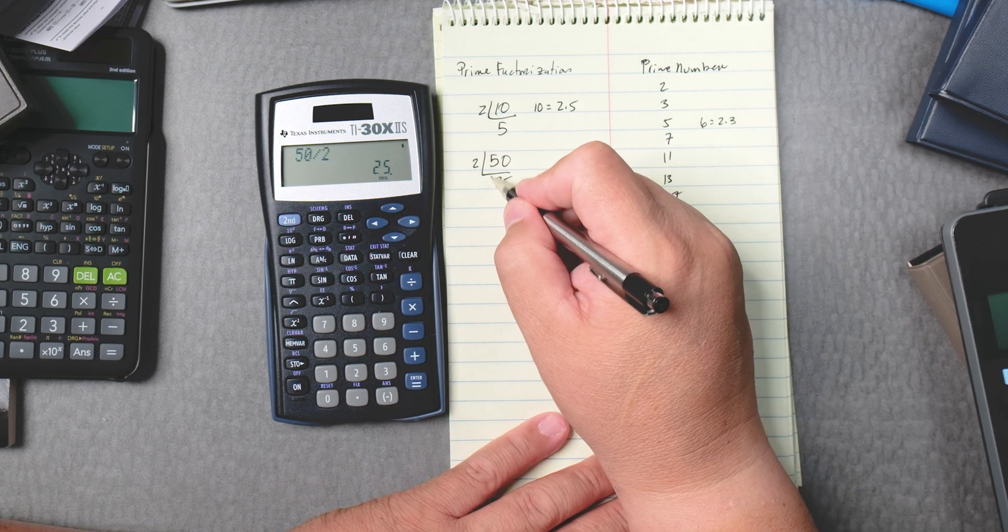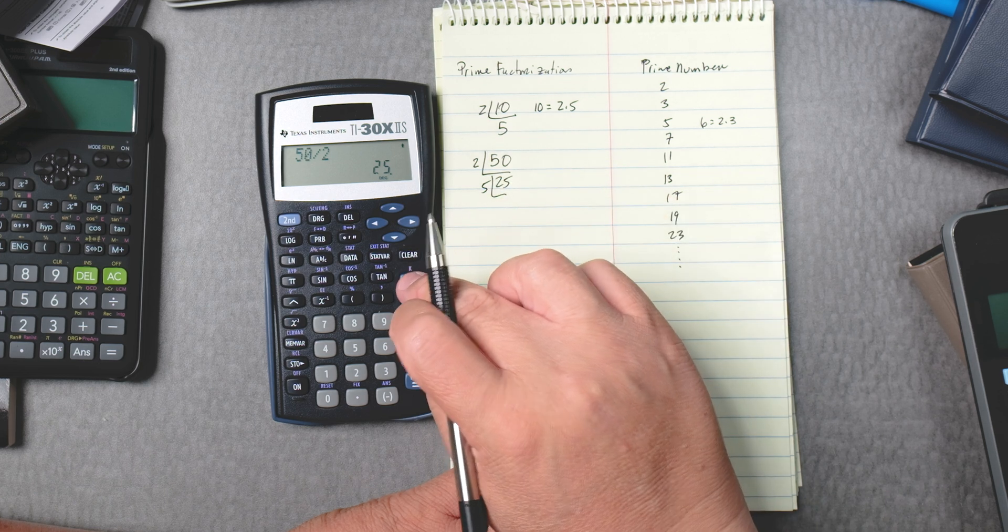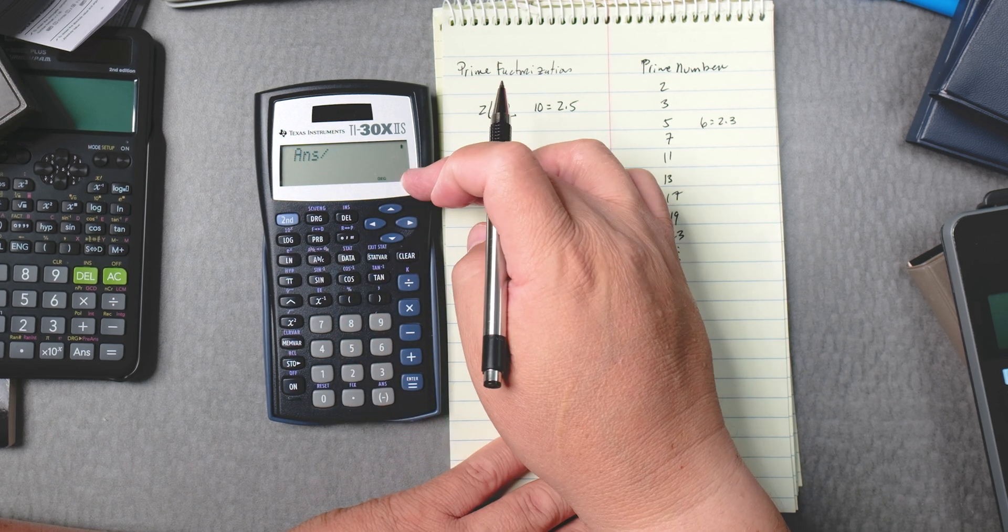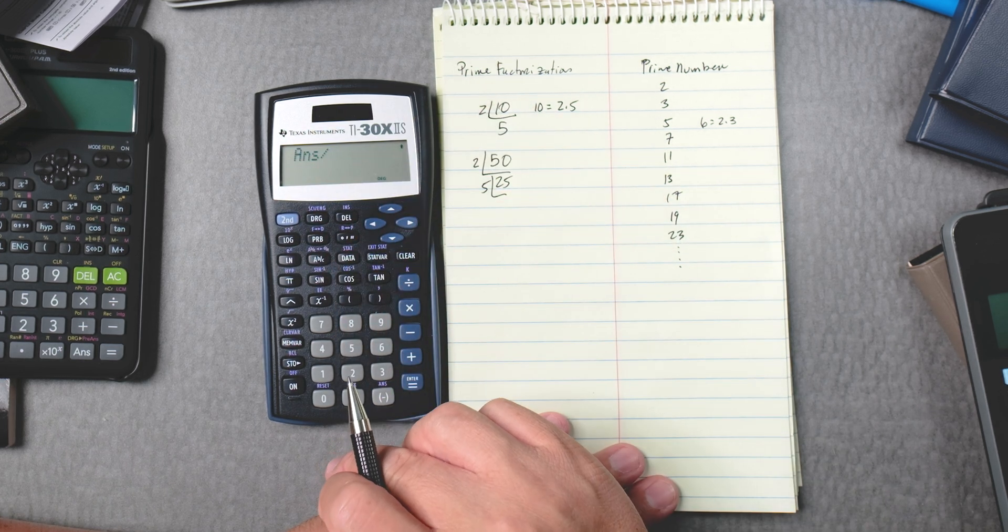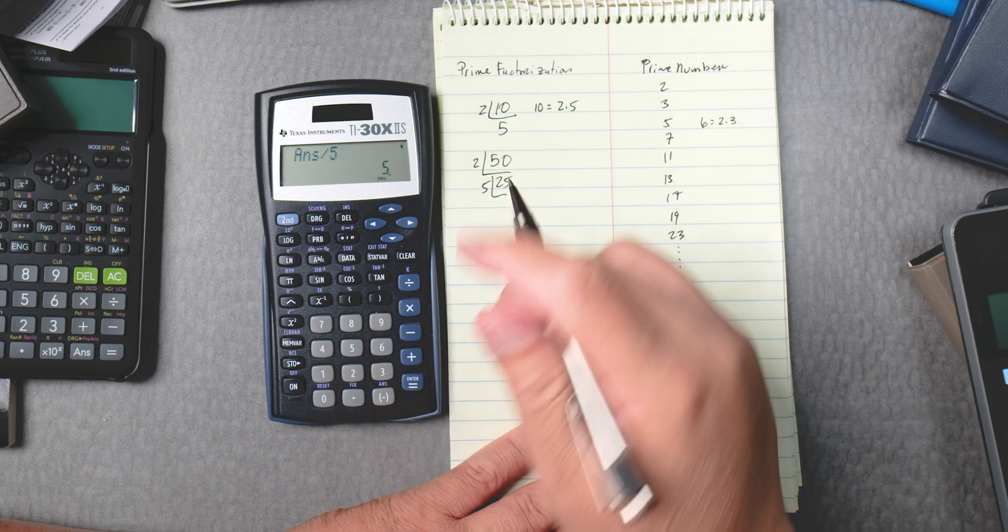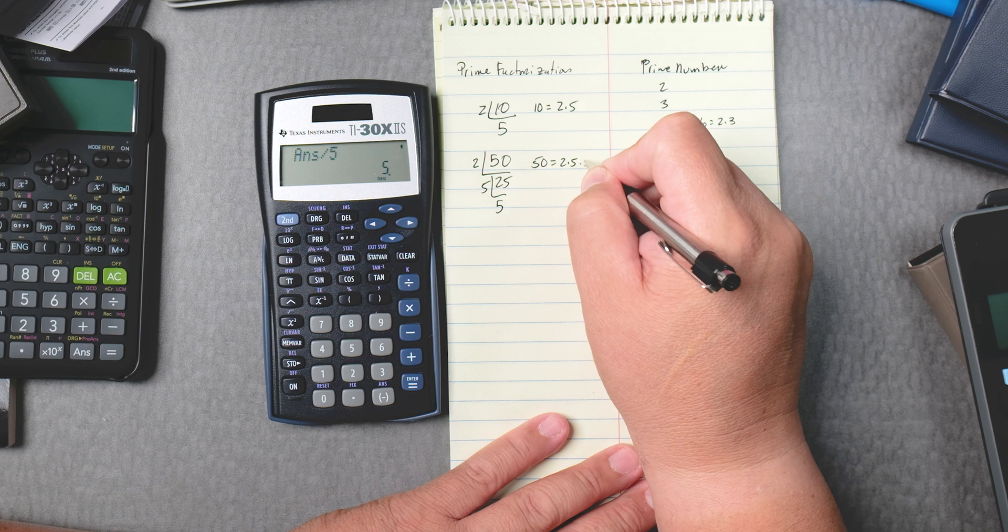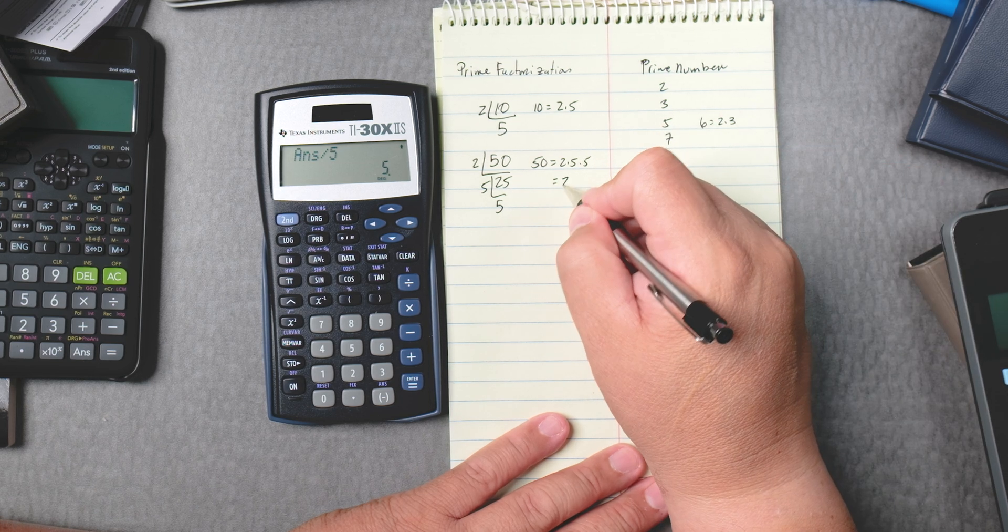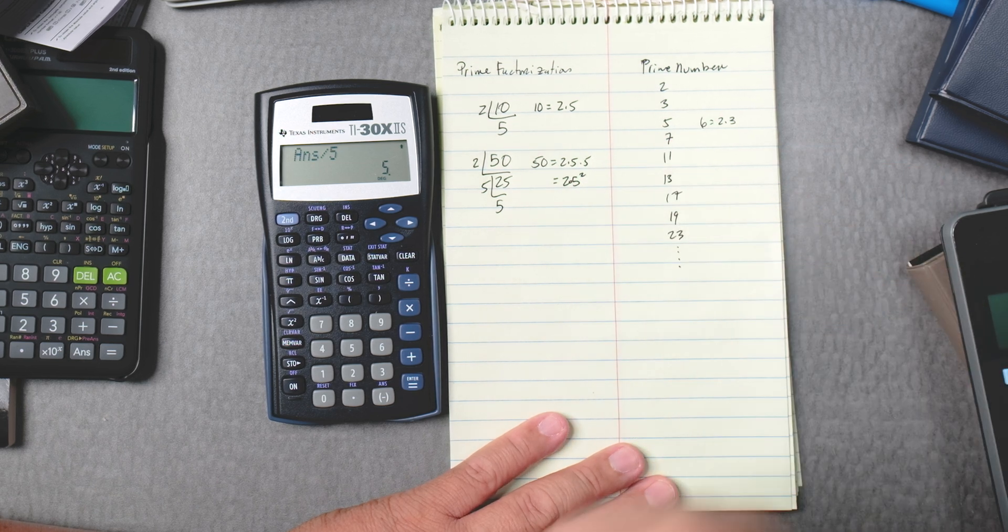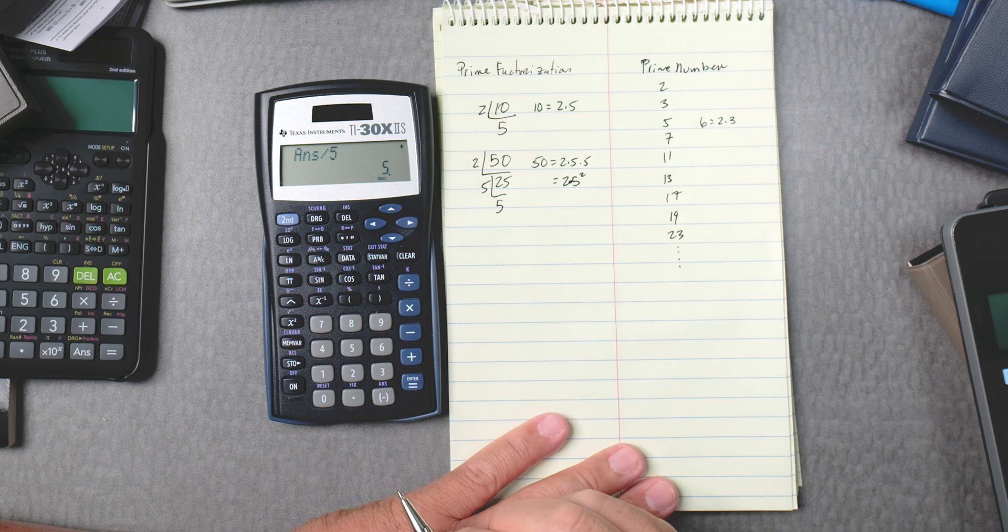We can keep going because, I can just say divide answer, right? Whatever answer there is going to be up there. Answer divided by 5 gives you another 5. So 50 is equal to 2 times 5 times 5, which is equal to 2 times 5 squared. And we need to make sure we put a point there.